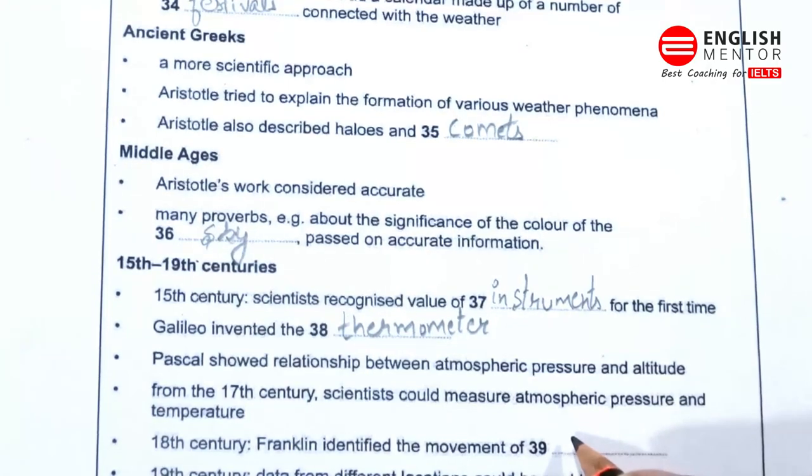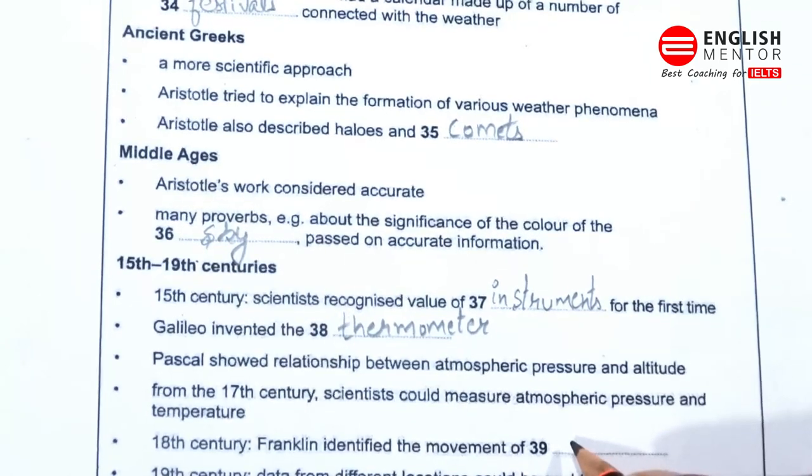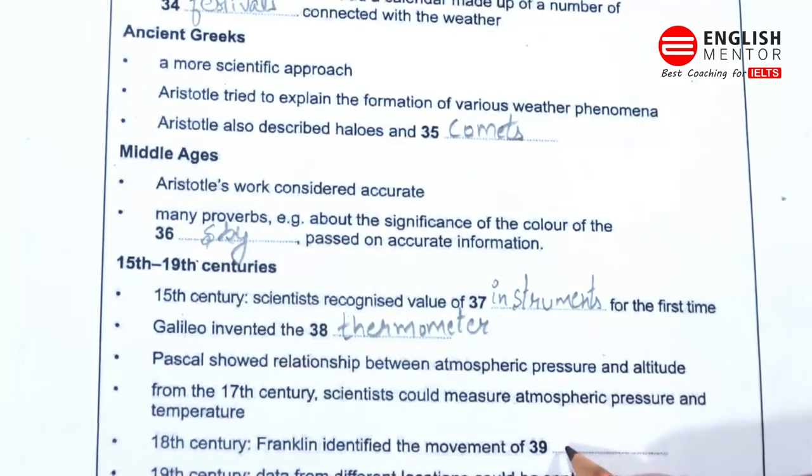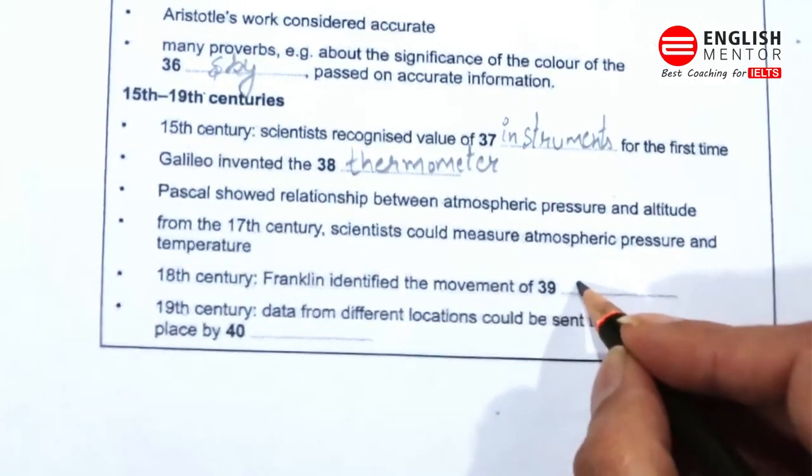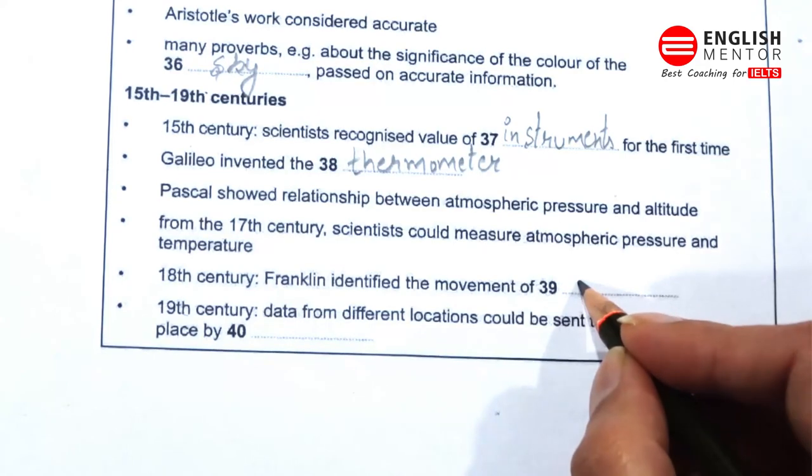In 1648, the French philosopher Pascal proved that pressure decreases with altitude. This discovery was verified by English astronomer Halley in 1686, and Halley was also the first person to map trade winds. This increasing ability to measure factors related to weather helped scientists to understand the atmosphere and its processes better, and they started collecting weather observation data systematically.